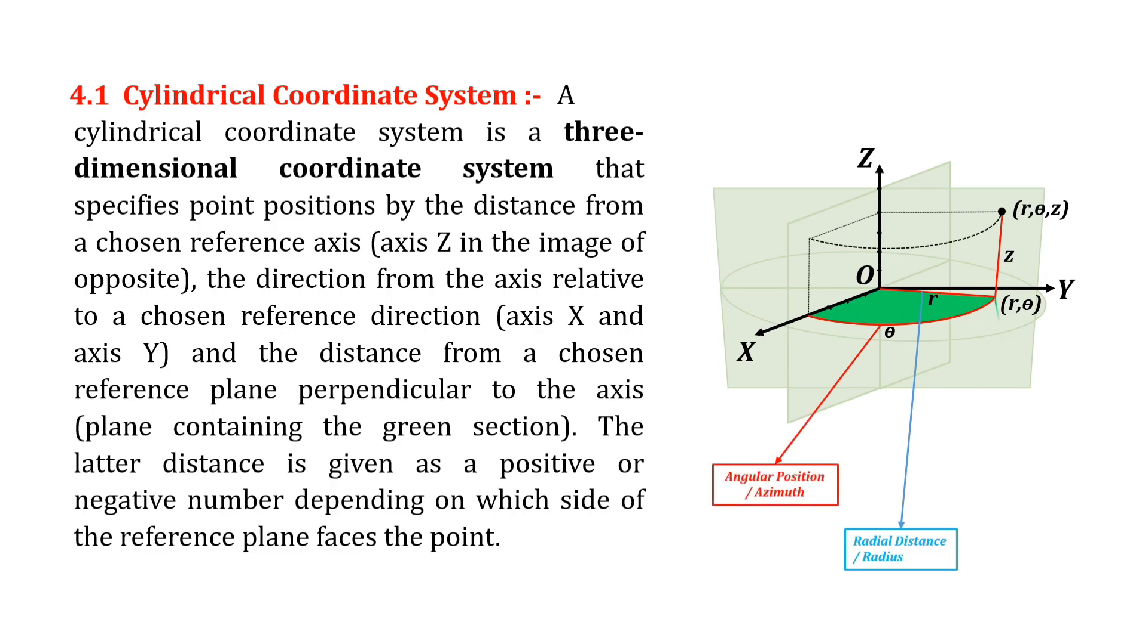The radius and the azimuth are together called the polar coordinates, as they correspond to a two-dimensional polar coordinate system in the plane through the point, parallel to the reference plane.